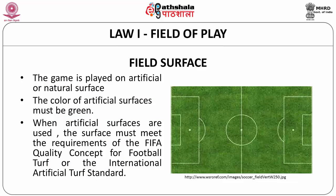Football has a lot of rules which includes 17 laws. Law 1 is the field of play. In the field of play, we look at the surface. The game is played on artificial or natural surface. The colour of the artificial surfaces must be green. When artificial surfaces are used, the surface must meet the requirements of the FIFA Quality Concept for Football Turf or the International Artificial Turf Standard.